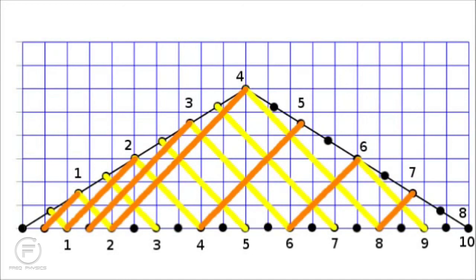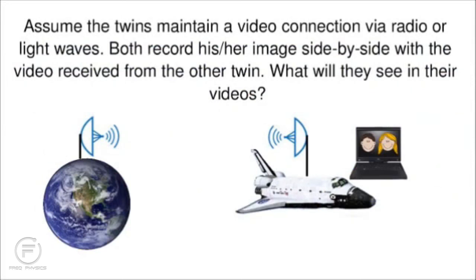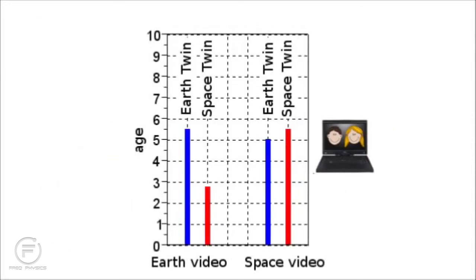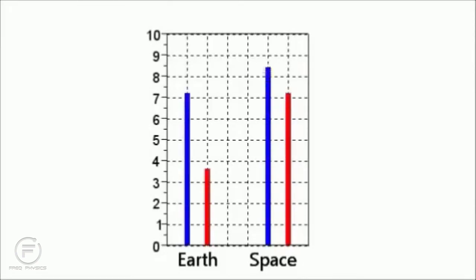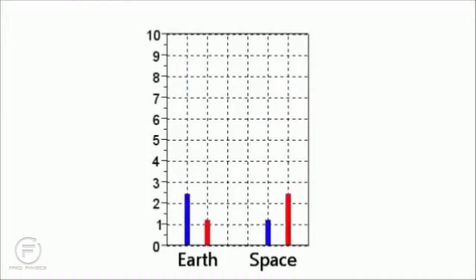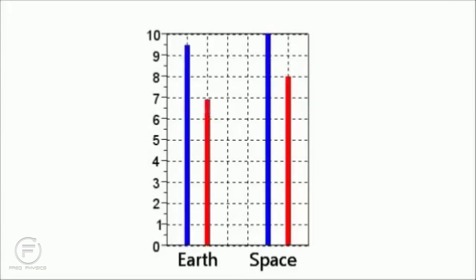Light or radio waves propagate along paths corresponding to the green diagonal lines on the spacetime diagram. When it's year four on Earth, we follow a diagonal line from Earth back in time towards space twin — she appears to be two years old in her received video. So when Earth twin is four, he's watching a video of space twin at age two. Likewise when space twin is four, we follow a diagonal line back towards Earth — it left Earth when Earth twin was two. We can do this for each twin's birthday. When the twins reunite, they'll have two videos each showing both twins. Overall they see a very different unfolding of events, but they both end up in agreement that Earth twin aged ten years and space twin aged eight years.